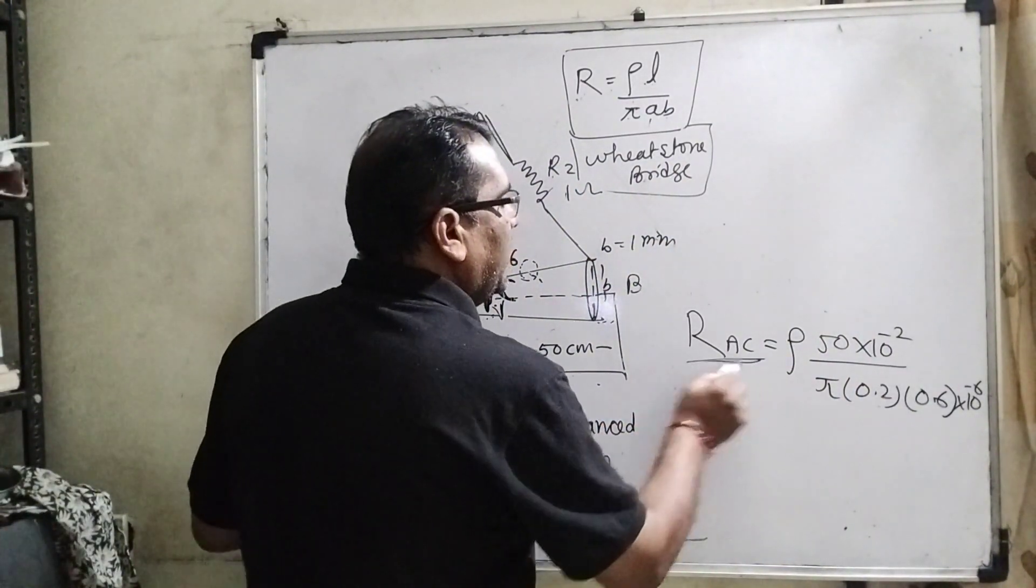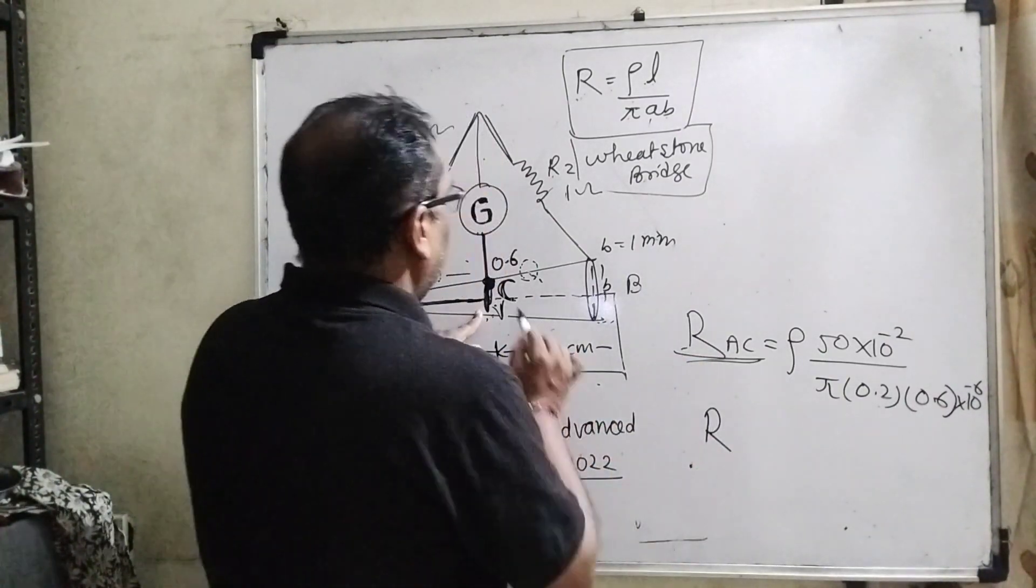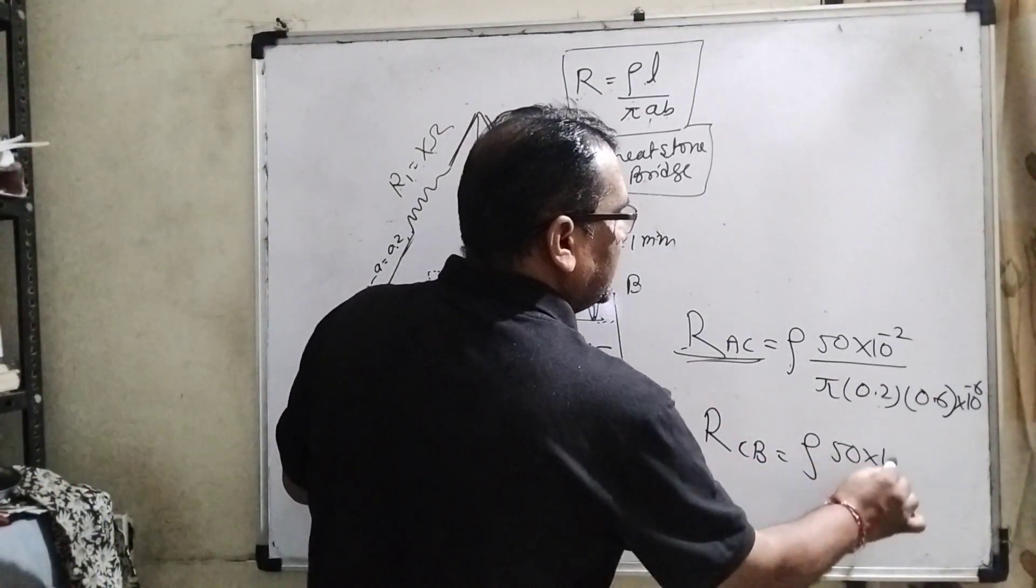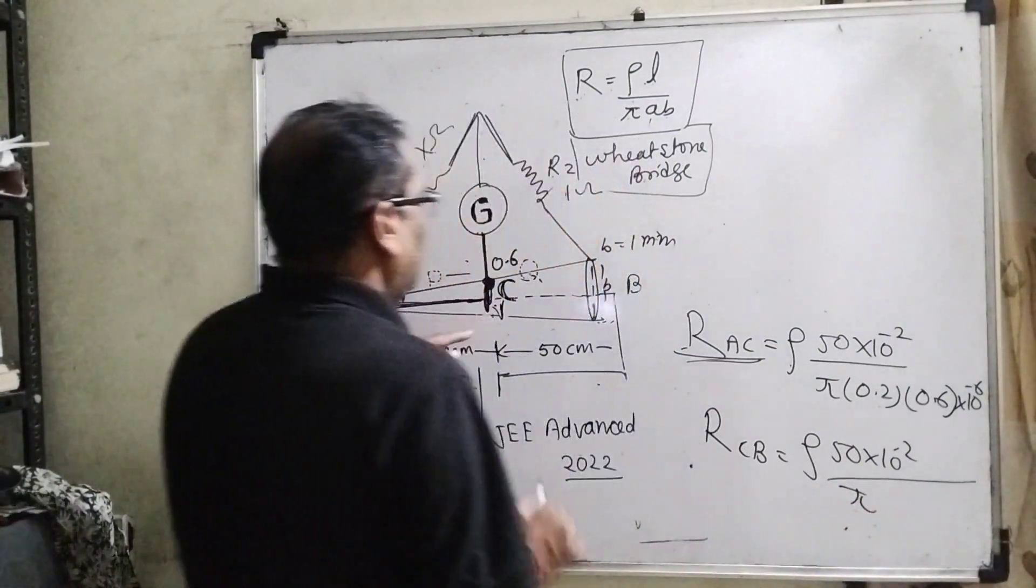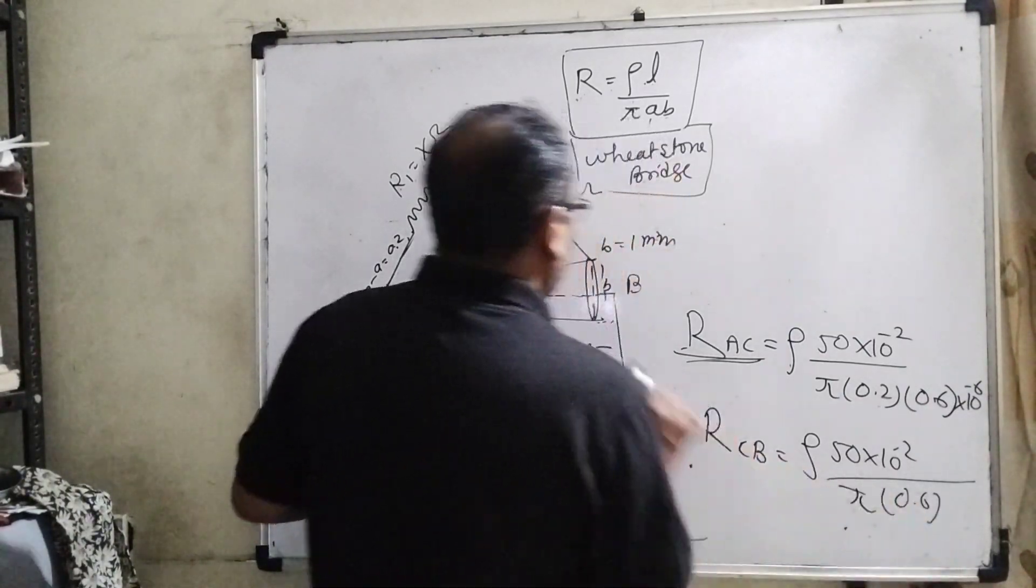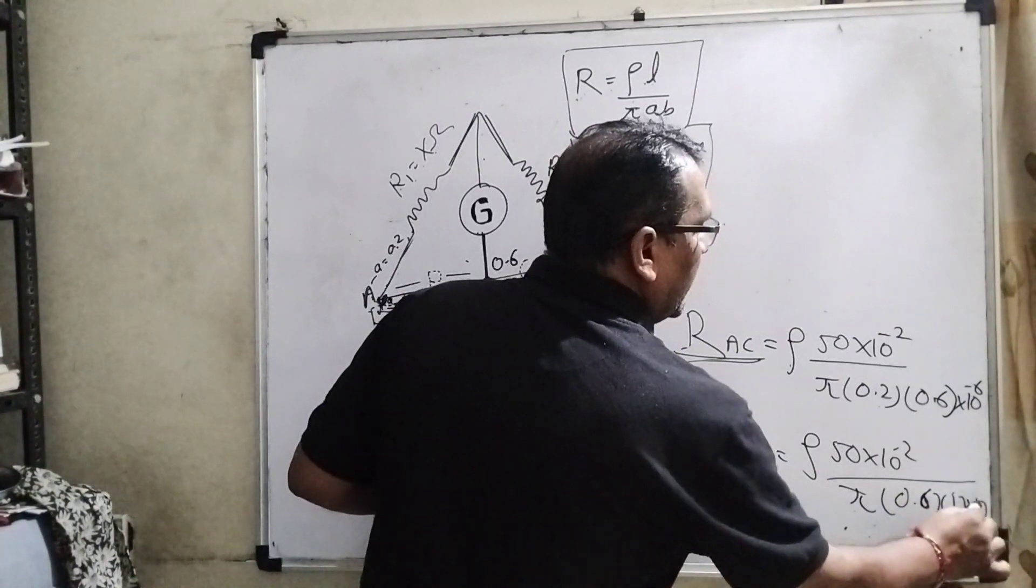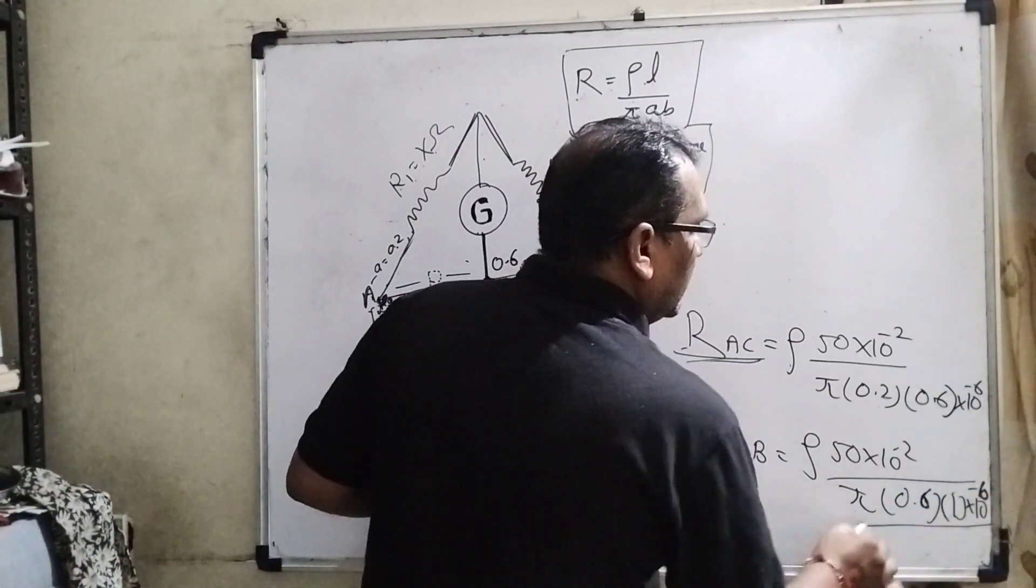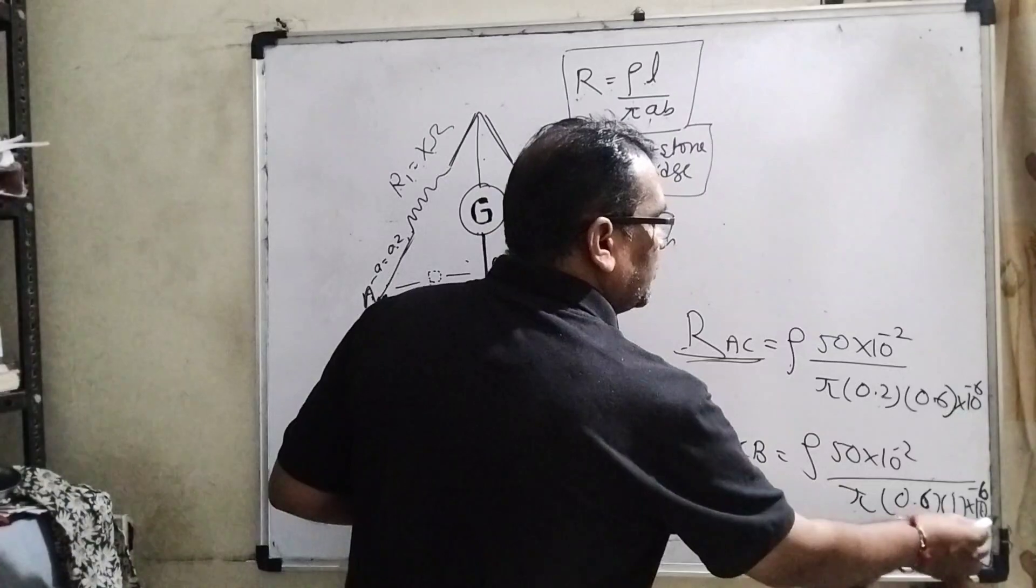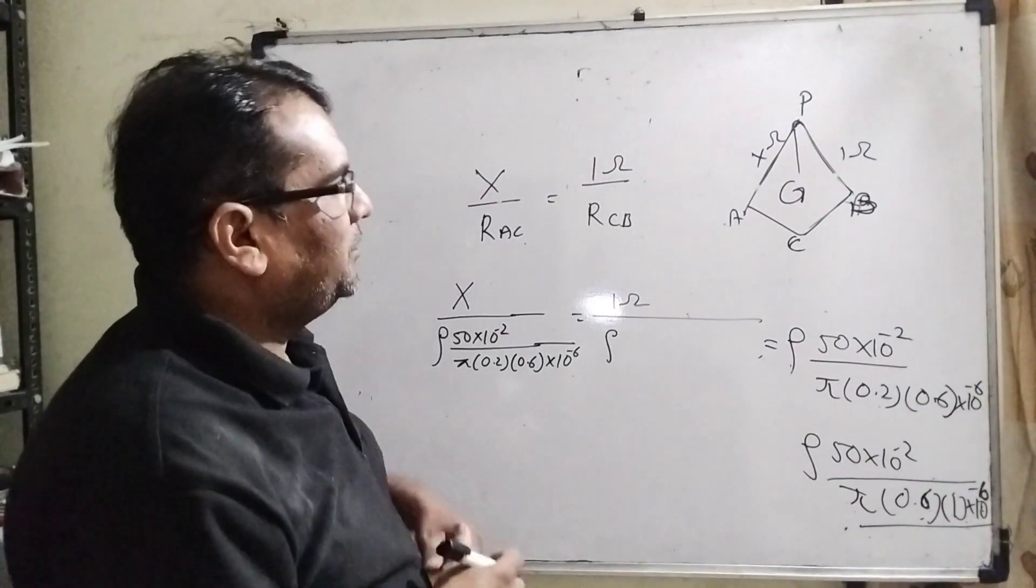Now resistance from C to B. Similarly, specific resistivity, same thing, 50 centimeter. Then pi, and the radius at C cross-section is 0.6 and at end B the radius is 1, and 10 raised to power again minus 6 to convert mm to meter. Here 10 raised to power minus 3 times 10 raised to power minus 3, now 10 raised to power minus 6. Now we put the value of this resistance according to the Wheatstone bridge.